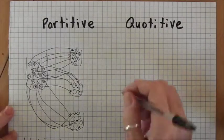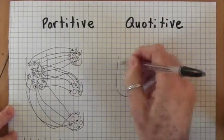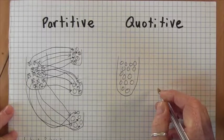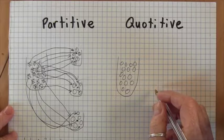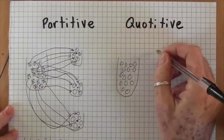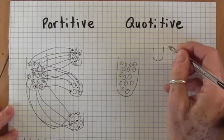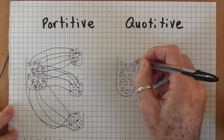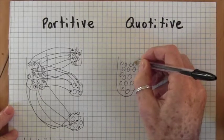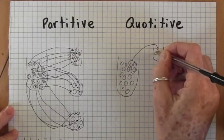Now for quotative division, I'm going to start with that same bag of 15 cookies. But this time, instead of knowing how many people I'm giving them to, I'm going to know how many cookies fit in each bag. So I take a bag that only holds three cookies and put three cookies into it.